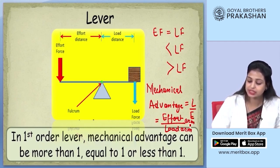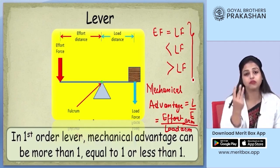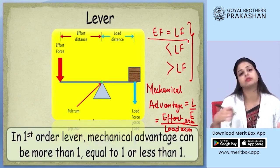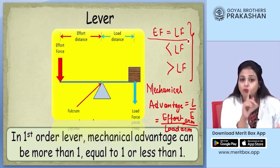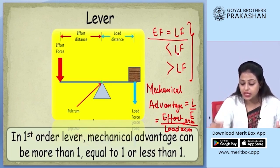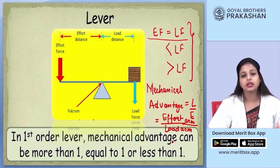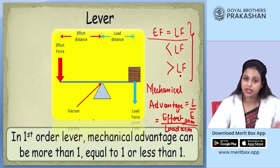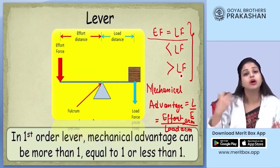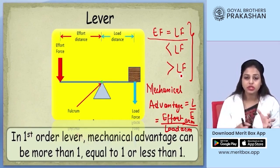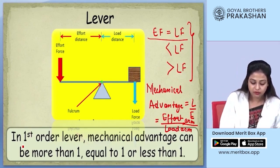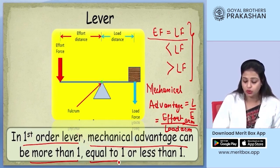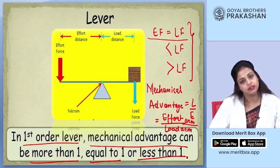In all three cases, we get three different values for mechanical advantage. When EF equals LF, the mechanical advantage becomes equal to 1. When EF is less than LF, mechanical advantage comes out to be less than 1. And when EF is greater than LF, mechanical advantage becomes more than 1. So depending on the position of the fulcrum, in a first order lever the mechanical advantage can be more than 1, equal to 1, or even less than 1.